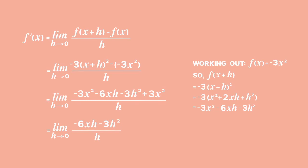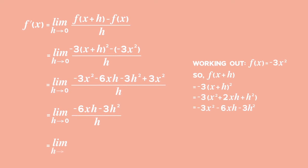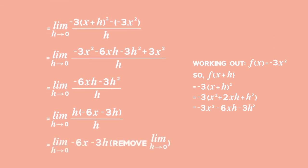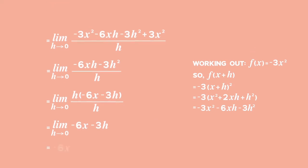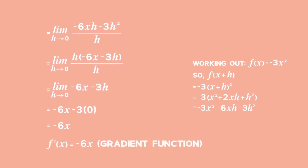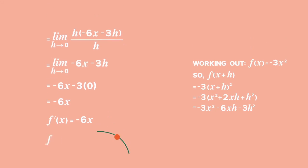Take out h as a common factor to get the limit as h tends to 0 of h times negative 6x minus 3h all over h. At this point, all factors with an h should cancel out. Remove the limit as h tends to 0 and substitute 0 for h. This gives negative 6x minus 3 times 0, which is negative 6x. The gradient function f prime of x equals negative 6x gives the gradient at any point on the curve f of x equals negative 3x squared. We found this using first principles.